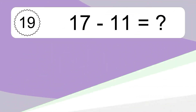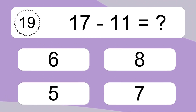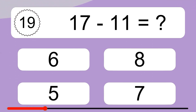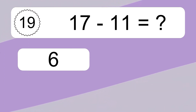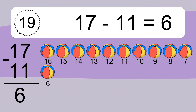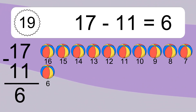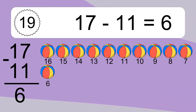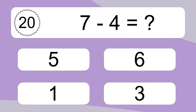17 minus 11 equals what? 17 minus 11 equals 6. Let's count it. 16, 15, 14, 13, 12, 11, 10, 9, 8, 7, 6.